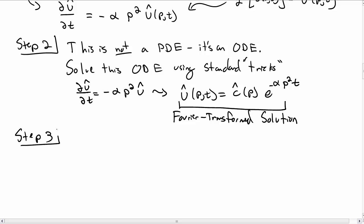So step three is, what is this c hat? What is c hat of p? What c hat is, is it's actually the Fourier transform of the initial condition for our system.